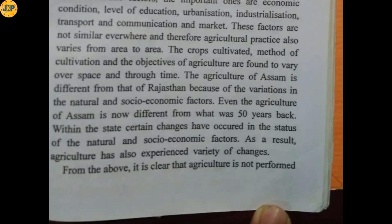For instance, the agriculture of Assam is different from that of Rajasthan due to variation in natural and socio-economic factors. Even the agriculture of Assam today is different from what it was 50 years back, because natural and socio-economic factors have changed over time according to the passage of time.